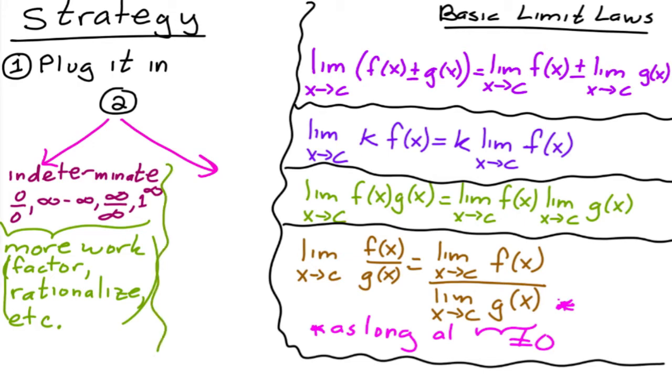Okay, now the other thing that can happen, and this one confuses a lot of students, is that you can get a constant over zero when you plug this in. Now, this is different than zero over zero, and it's not indeterminate. This is different. So if you imagine having a constant, let's just say, for example, four,